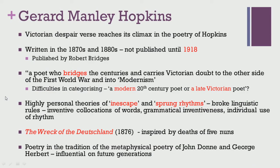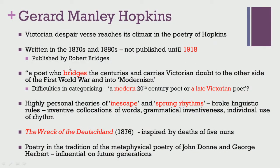As we come to the end of our discussion on Victorian poetry, we take a look at the poetry of Gerard Manley Hopkins. It is said that the Victorian despair in verse reaches its climax in the poetry of Hopkins. His poetry was written in the 1870s and 1880s but was only published in 1918 by his close friend Robert Bridges. He is considered a poet who bridges the centuries, carrying Victorian doubt to the other side of the First World War and into modernism. Because of this gap between writing and publication, many historians find it difficult to classify his work, and there is debate about whether he should be considered a modern 20th century poet or a late Victorian poet.